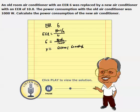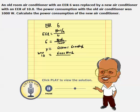The room size is not changing, but we are just replacing the old air conditioner with a new one. The new air conditioner has an EER of 10, and it is still pulling 6,000 BTUs per hour out. How many watts of power does the new one consume?